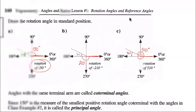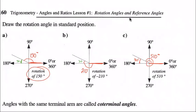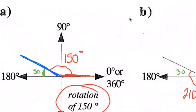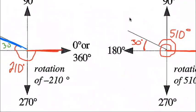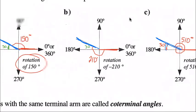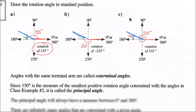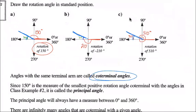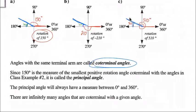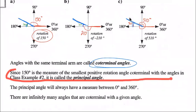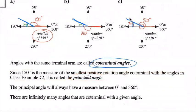You can see that a 150-degree rotation, a negative 210-degree rotation, and a 510-degree rotation all terminate at the same place — they all have the same 30-degree reference angle. We call those types of angles coterminal. Coterminal angles terminate at the same place — their terminal arm is in the same position. Since 150 degrees is the smallest positive rotation angle coterminal with these angles, it is called the principal angle.